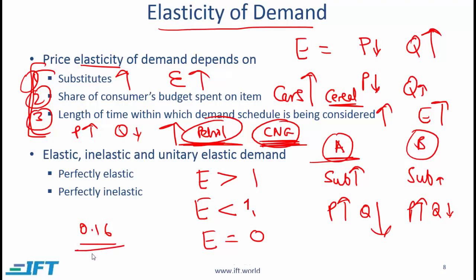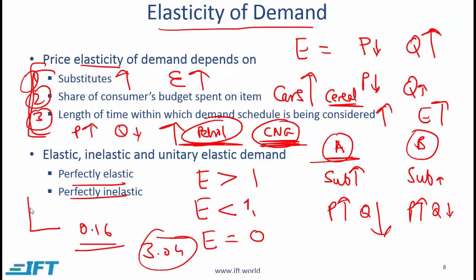At the other end of the spectrum, furniture has an elasticity of 3.04, which is relatively high. Furniture tends to be expensive and people can delay its purchase if the price is too high, giving it a more elastic demand. Perfectly elastic demand means the demand curve is horizontal — we will see this later in the context of perfect competition. Perfectly inelastic means the demand curve is vertical, indicating that no matter what happens to price, the quantity demanded stays the same.